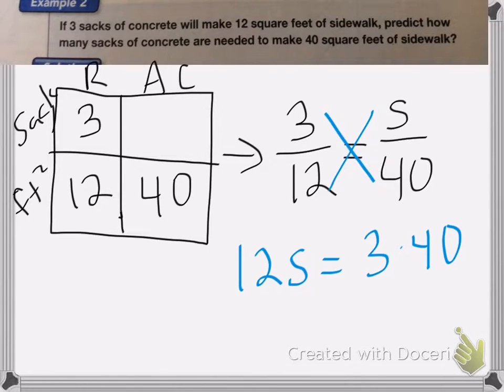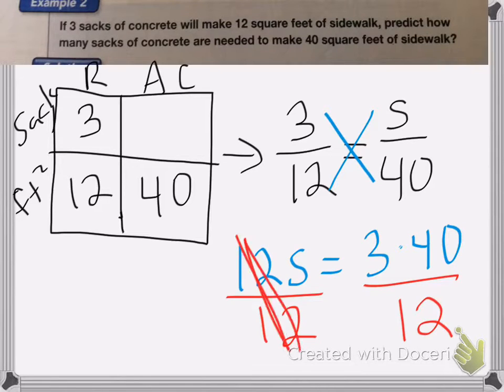Again, don't multiply these two numbers together yet. We will be able to cancel. So divide both sides by 12 to get the s all by itself. The 12s cancel.